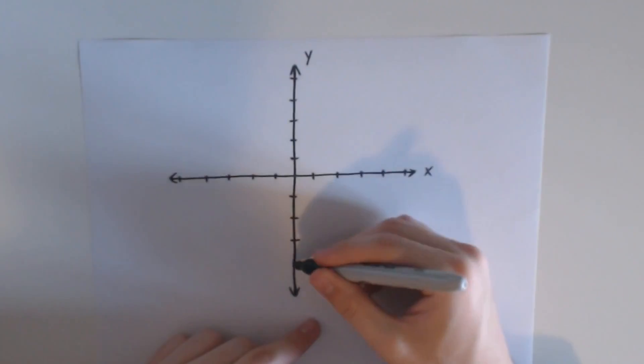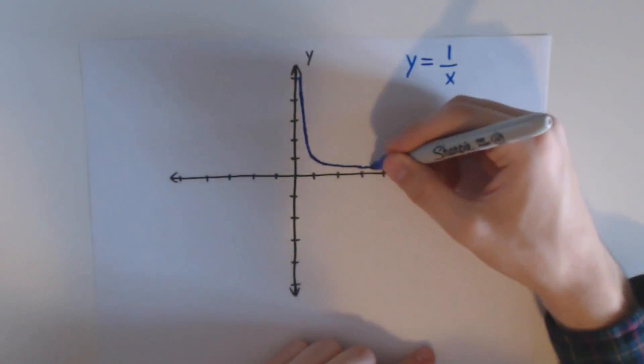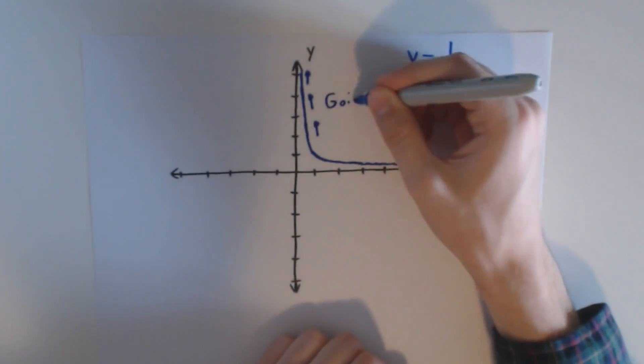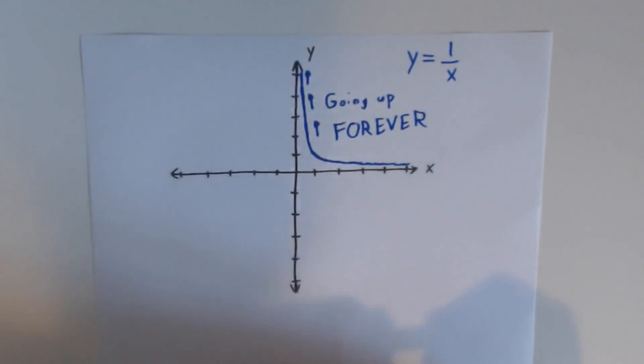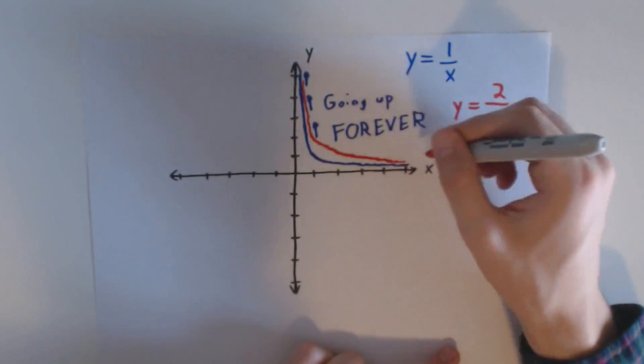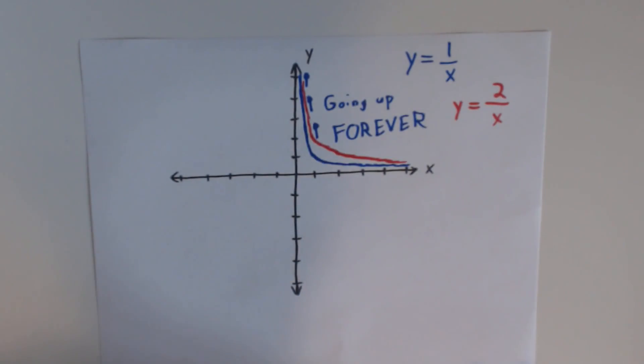Looking at a graph of the equation y equals 1 over x, we can clearly see that as x gets closer to zero, y approaches infinity. Doesn't matter what number you're dividing, the graph still goes up forever as you get close to zero. So is one divided by zero infinity?